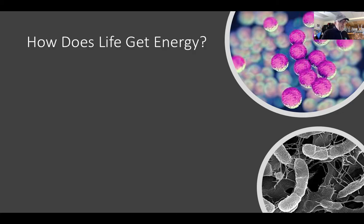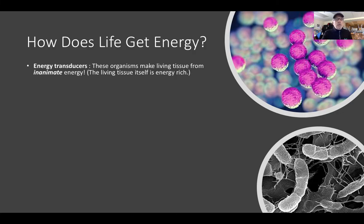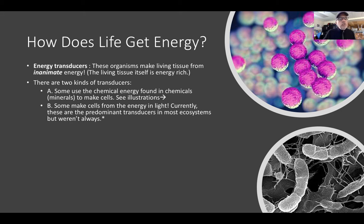How does life get energy? There are organisms called energy transducers, which are able to convert energy from an inanimate form to a form that is stored in the cell — animate energy that makes living tissue, and that living tissue is energy rich. There are two kinds of energy transducers. Some, like the bacteria pictured on the right side of the screen, use the energy found in minerals or chemicals in the soil, the seafloor, or in caves to make cells.